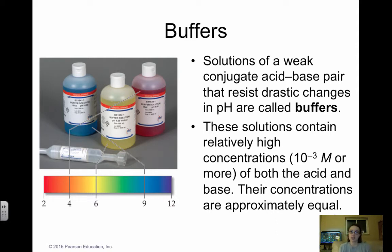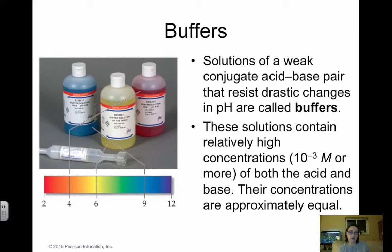These solutions are going to contain relatively high concentrations — relatively high can be 1×10⁻³ molar or higher — of both the acid and the base, and you want their concentrations to be as equal as possible. The most common real-world example is the buffer of carbonic acid (H₂CO₃) and hydrogen carbonate (HCO₃⁻). They work together to keep the pH of your bloodstream around 7.4, so any addition of acid or base will be resisted, and the pH of your blood might only change by 0.01 instead of an entire pH unit.